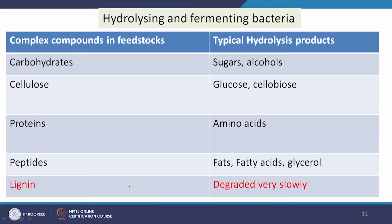For carbohydrates, cellulose, proteins, and peptides: sugars and alcohols are produced from carbohydrates; glucose from cellulose; amino acids from proteins; fatty acids and glycerol from lipids/peptides. In the case of lignin, degradation is very minimal.